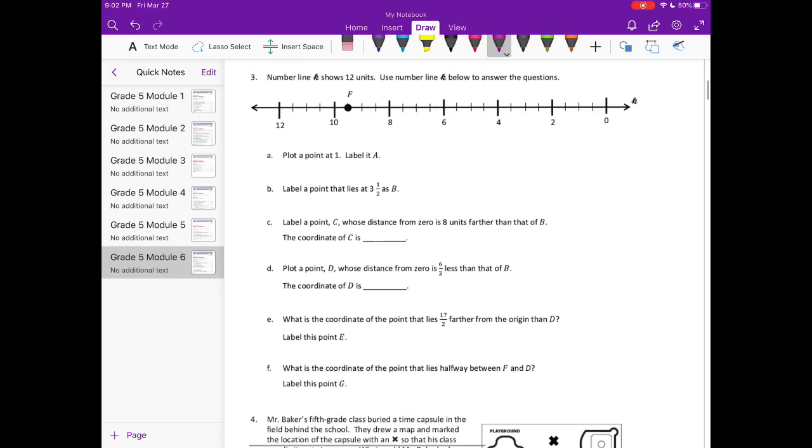Number 3, number line K shows 12 units. Use number line K below to answer the questions. Plot a point at 1. Label it A.